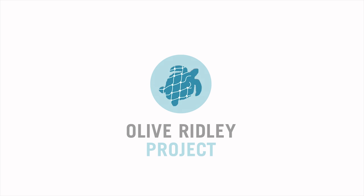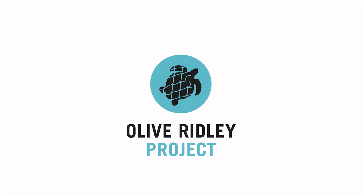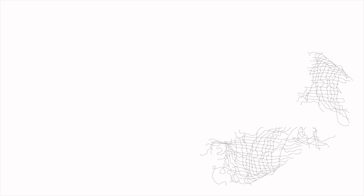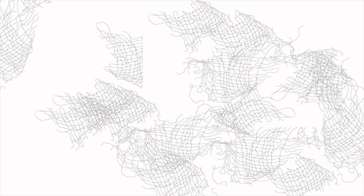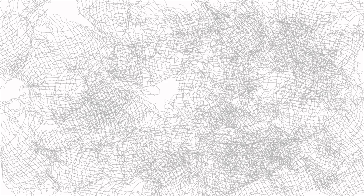The Olive Ridley Project, founded in the Maldives in 2013, attempts to identify key factors contributing to ghost nets in the Indian Ocean. In its first year, the project recorded a minimum of 107 ghost nets.